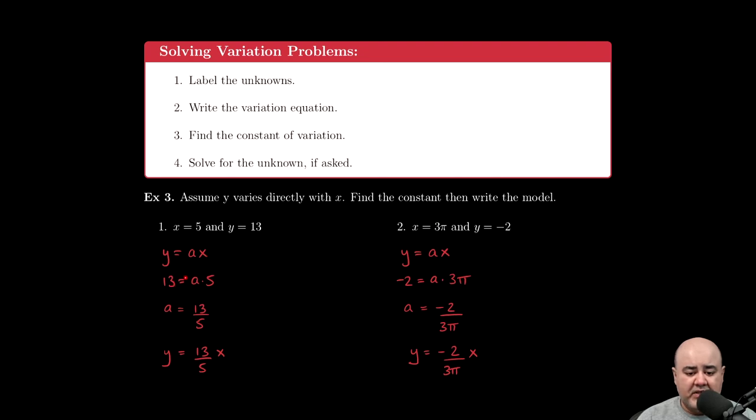Then we populate it with the known values. So we know that y equals 13, a is the constant of variation—that's what we're looking for—and x is 5. The first thing you want to do is always find the constant of variation, so we solve for a by dividing both sides by 5. So a turns into 13 over 5. At this stage, the question is not over because we were not asking for just the constant itself. We were asked to find the constant and then write the model as well.